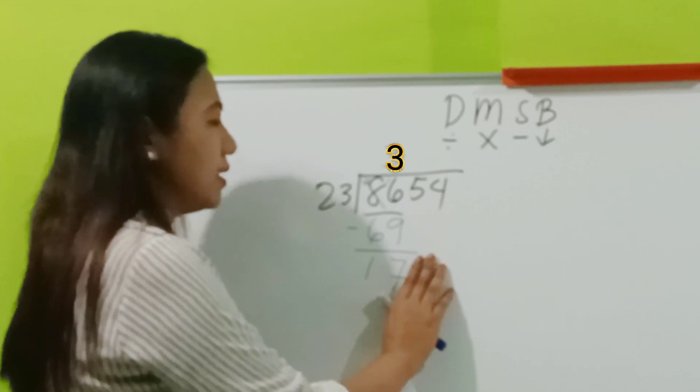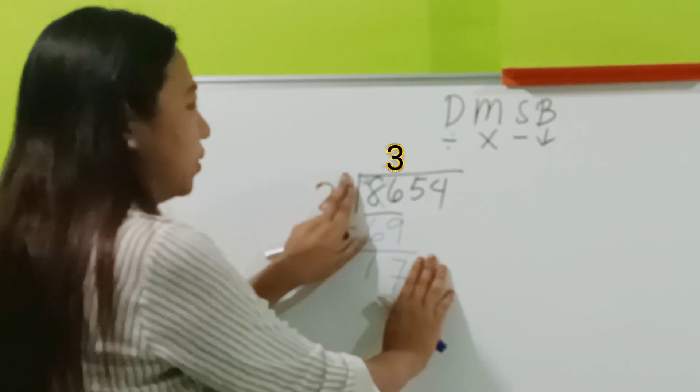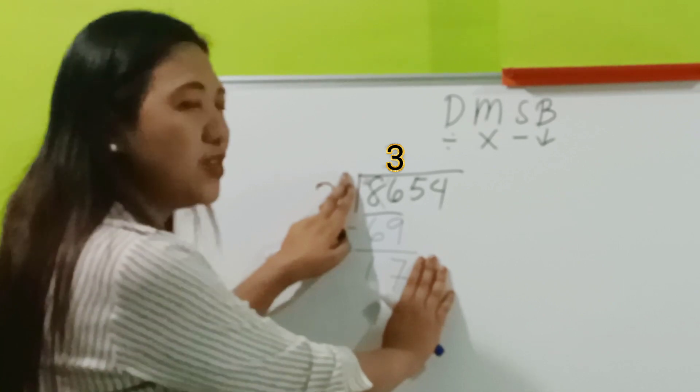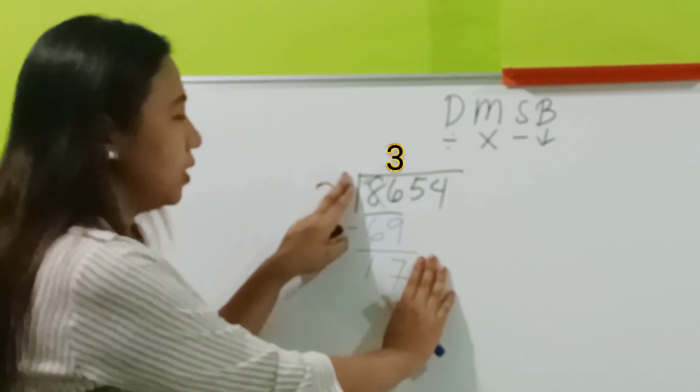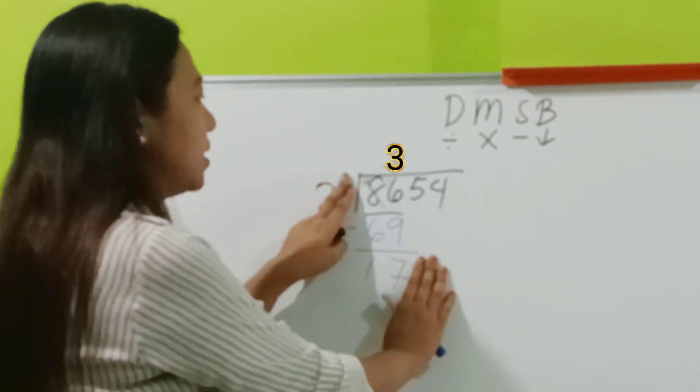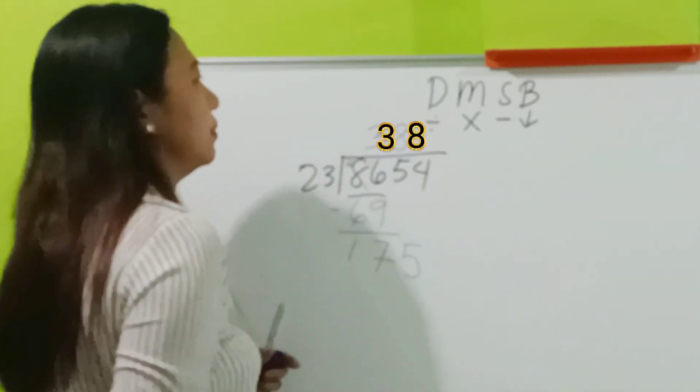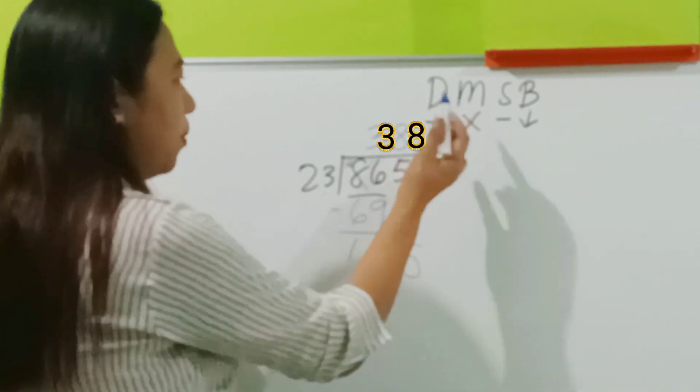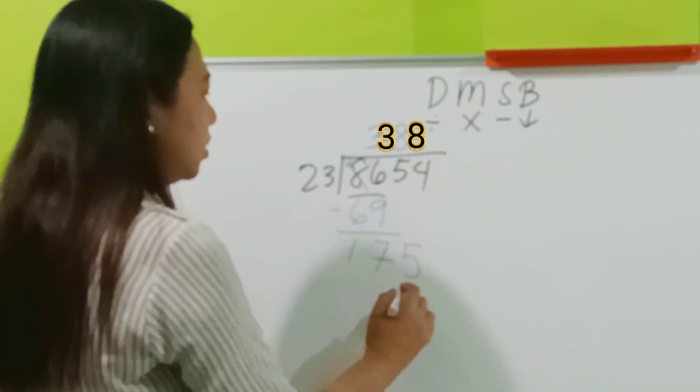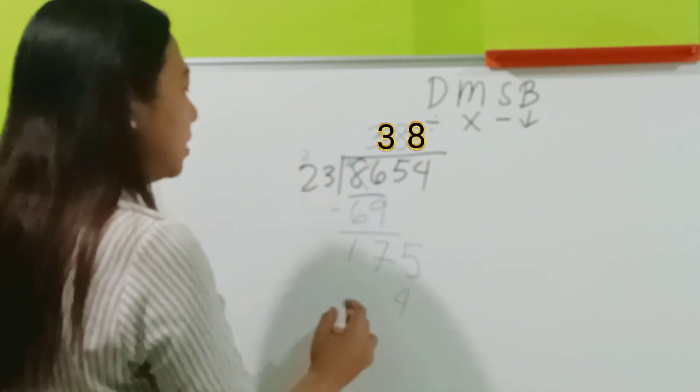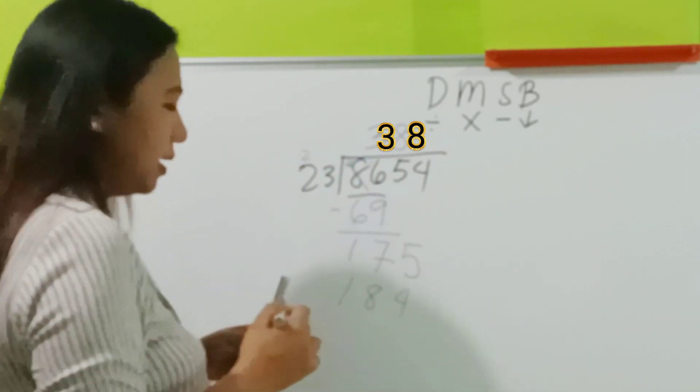Let's cover the last digit. Let's cover also the last digit. What do you see? 17 divided by 2, right? So, 17 divided by 2 is 8. Let's try 8. So, let's now multiply. 8 times 3 is 24. 8 times 2 is 16, plus 2 is 18. Again, we got a higher product.